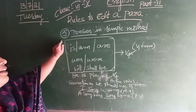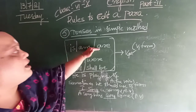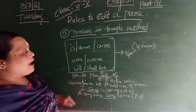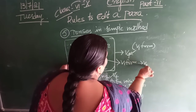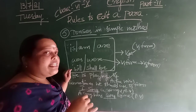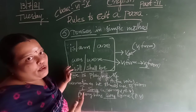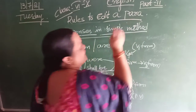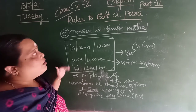This is rule number 5 — checking for tenses in simple method. Is, am, are, was, were, will, shall be: the V1 form should be converted to V4 form. And when it is in V3 form — was, were, will be — the V1 form in the sentence should be converted into V3 form, which is the past participle. When you have learned the tenses chart, you will be familiar with simple present, simple past continuous, past participle, and present participle.